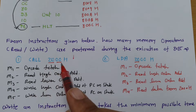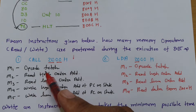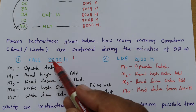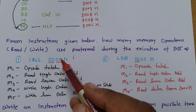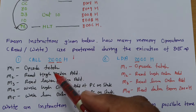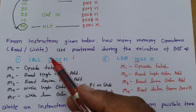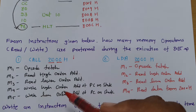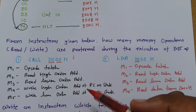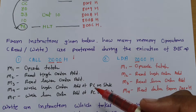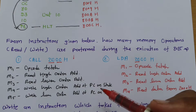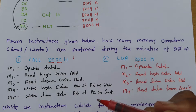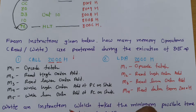For CALL 2000H: opcode fetch first, then read higher order, read lower order. Then it writes program counter data onto the stack — write higher order of PC onto stack, and lower order of address of PC onto stack. So there are five machine cycles in the CALL instruction.